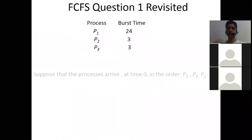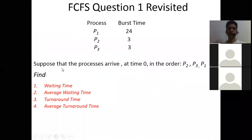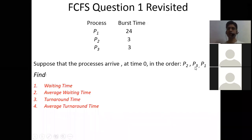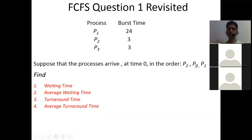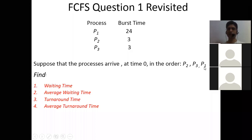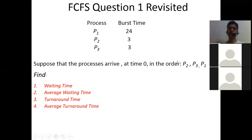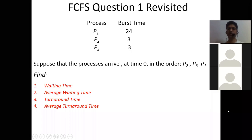Let's revisit the first question with a changed order. Now processes arrive in order P2, P3, P1. Calculate average waiting time and average turnaround time, then compare with the original order. Students are given 2 minutes to solve this.